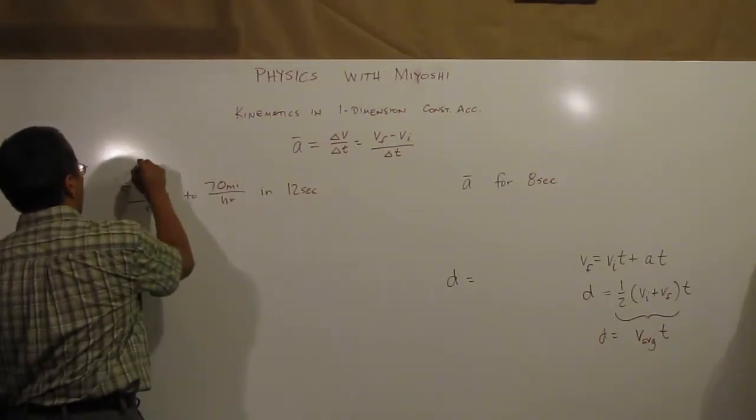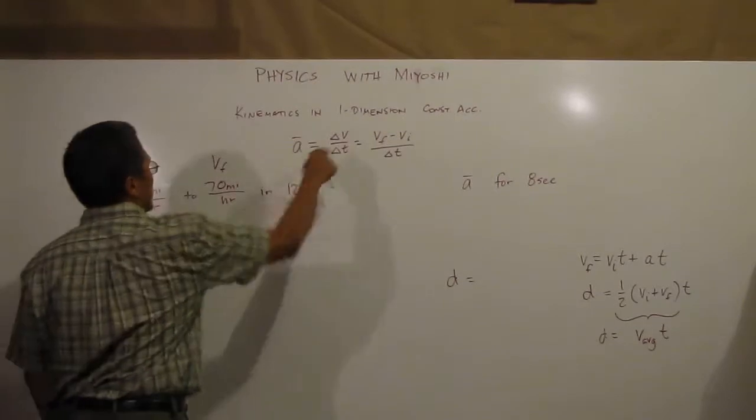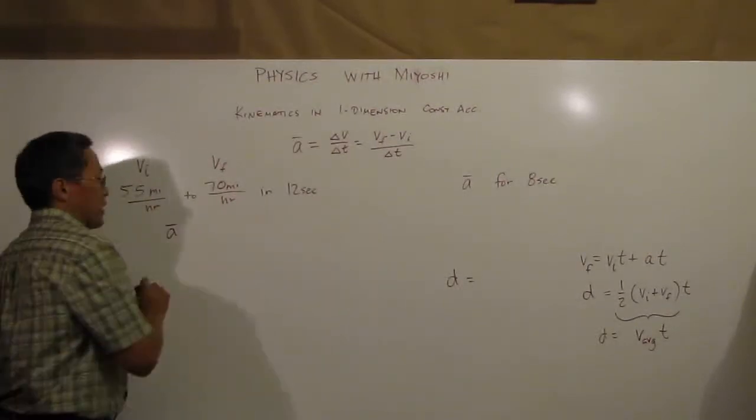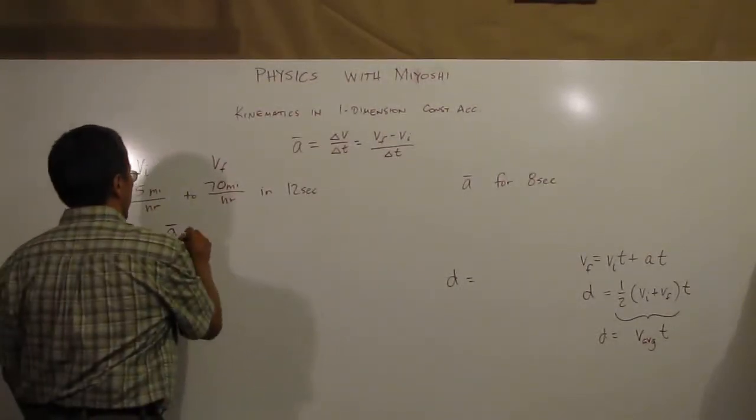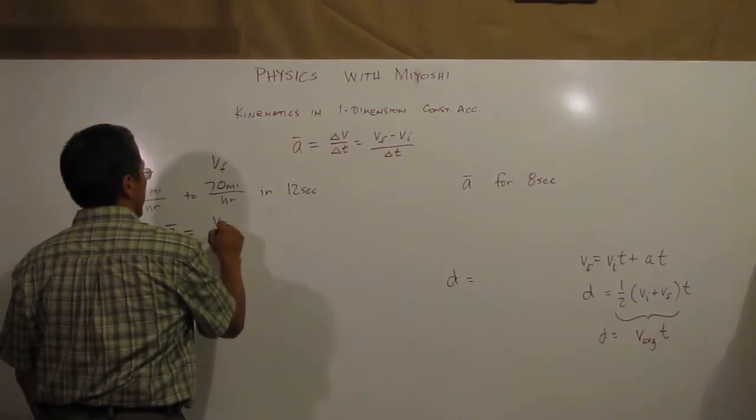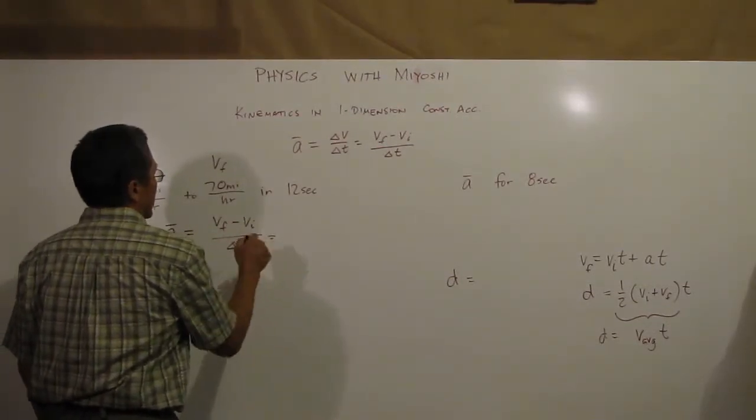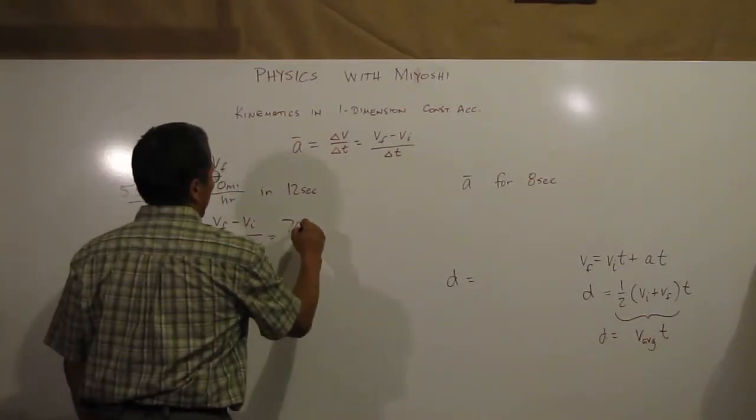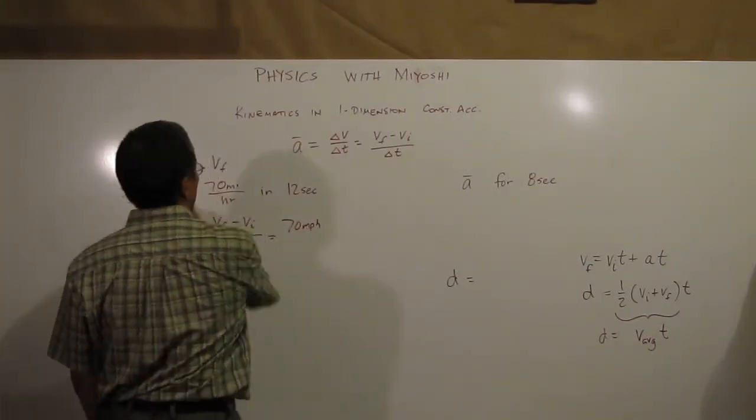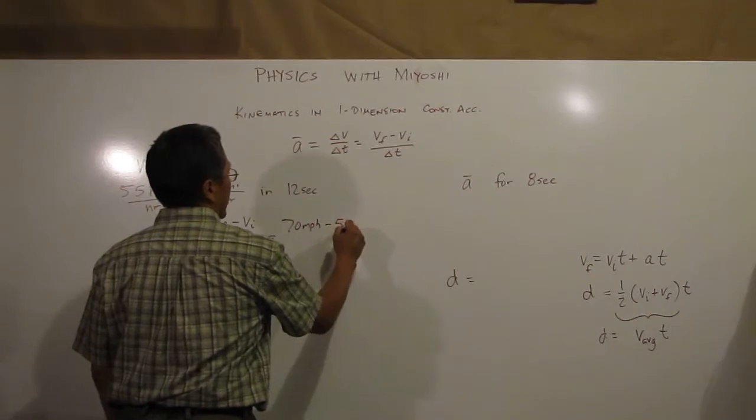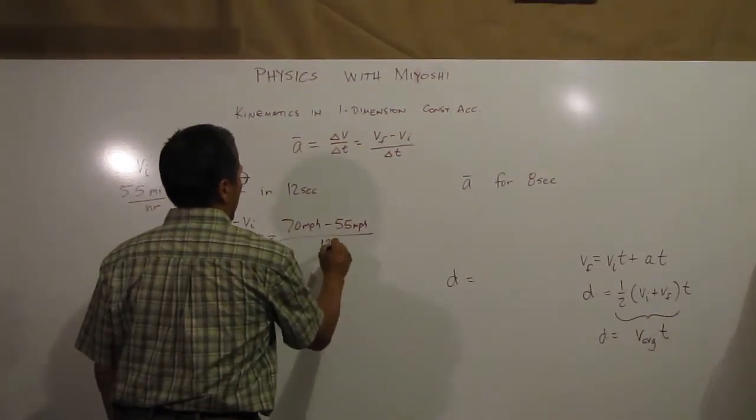Well, this is my V initial, this is my V final. So if I look at this equation I can say the average acceleration is my V final minus V initial divided by delta T. So my final is 70 miles per hour, my initial is 55 miles per hour, and I have 12 seconds.